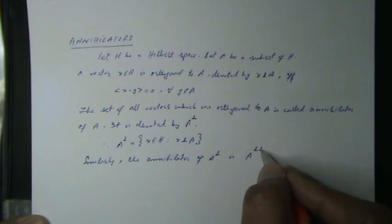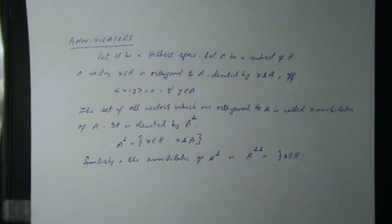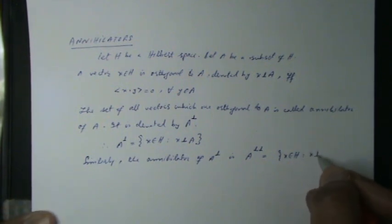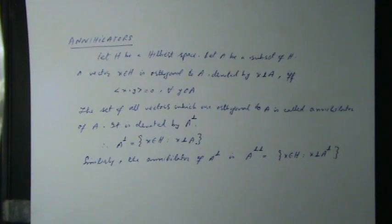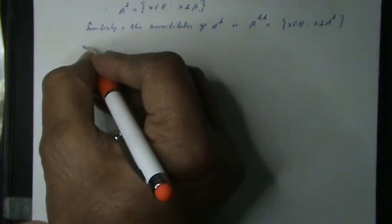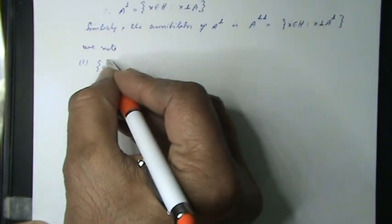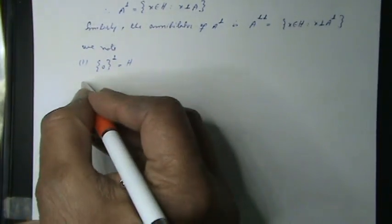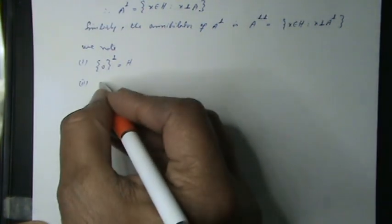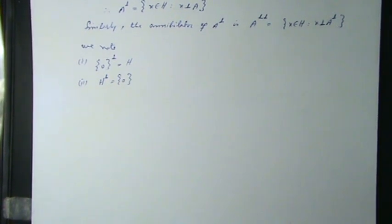The double annihilator A⊥⊥ = { x ∈ H : x ⊥ A⊥ }. Replacing A by H, we note that H⊥ is equal to the singleton set consisting of zero.